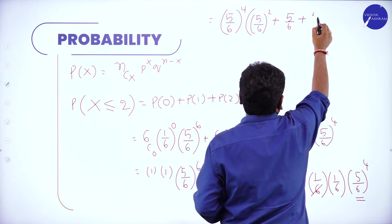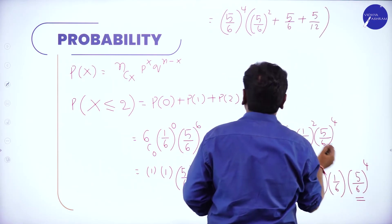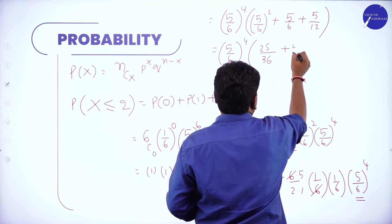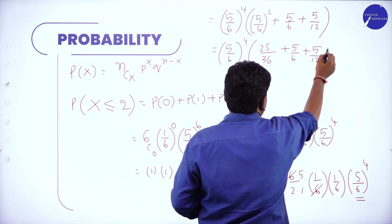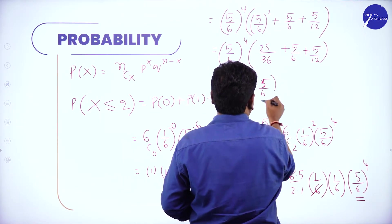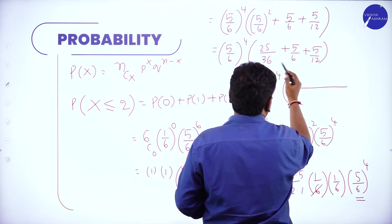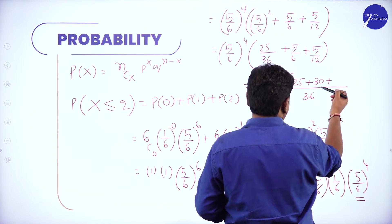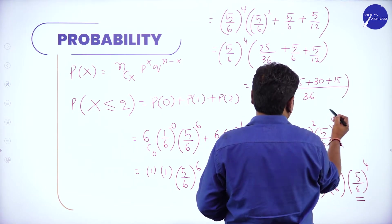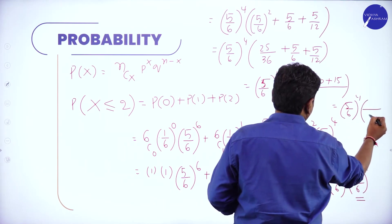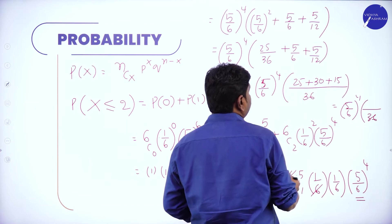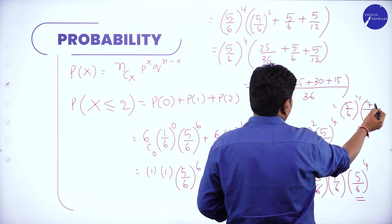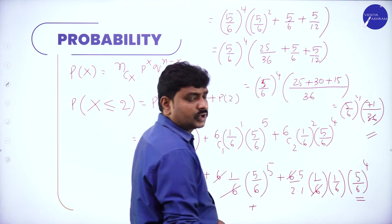Taking (5/6)^4 common, the remaining terms inside the bracket are (5/6)^2 + (5/6) + (5/12). Taking LCM of 36, the numerator becomes 25 + 30 + 15 = 70 (approximately). The final simplified answer is (5/6)^4 multiplied by that fraction over 36.